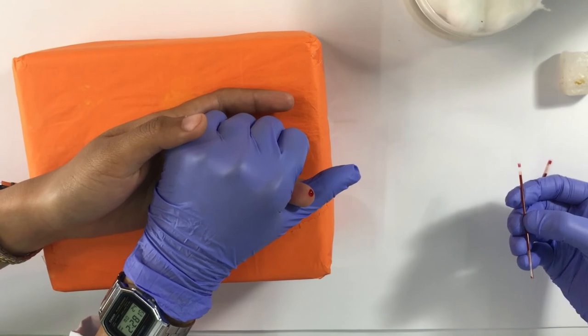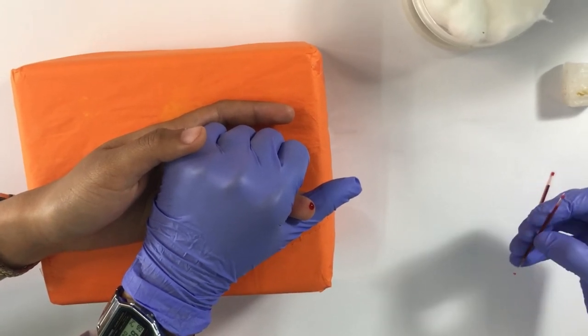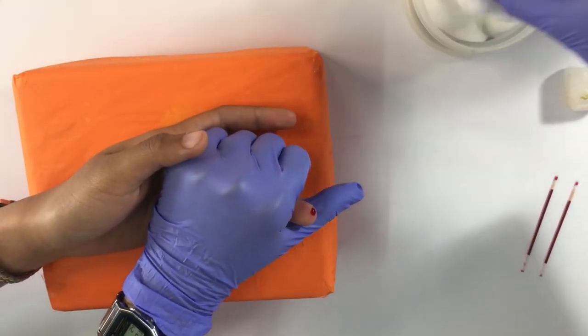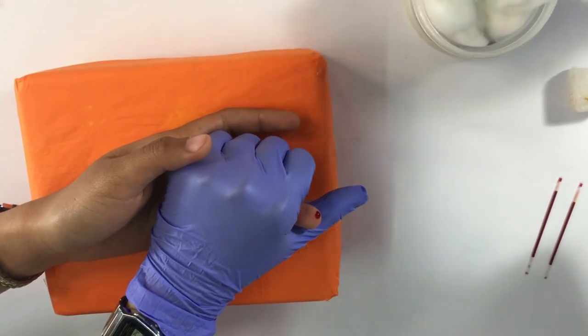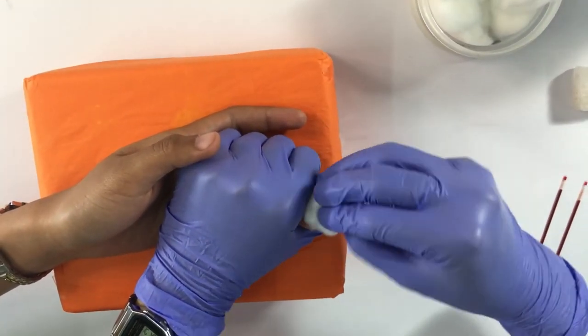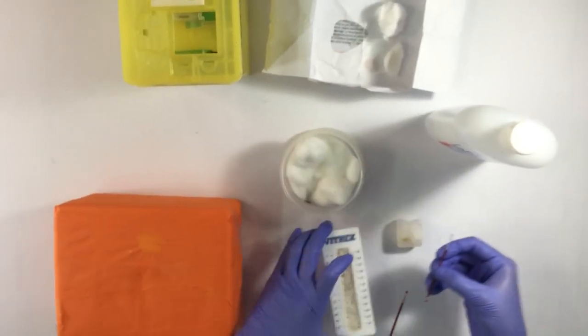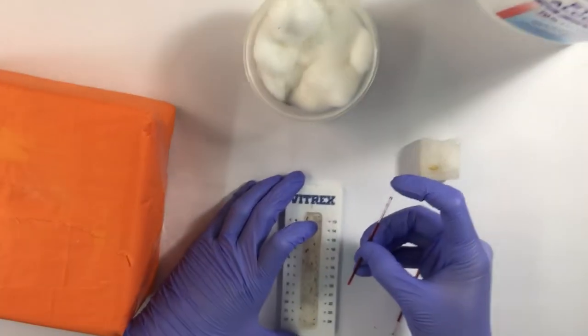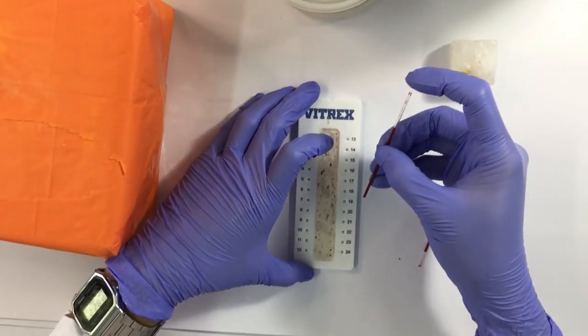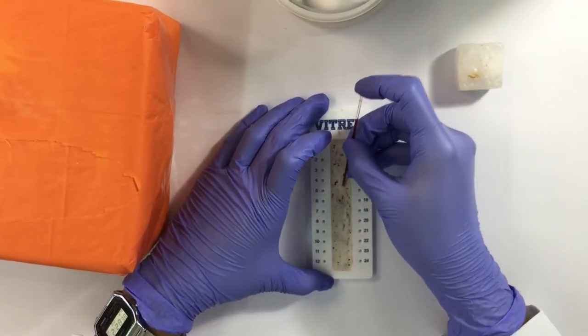After which, perform patient care. Patient care involves applying clean, dry cotton on the site of collection and instructing the patient to apply pressure until bleeding stops. The capillary tubes must be properly sealed with clay sealant first, followed by paraffin wax.